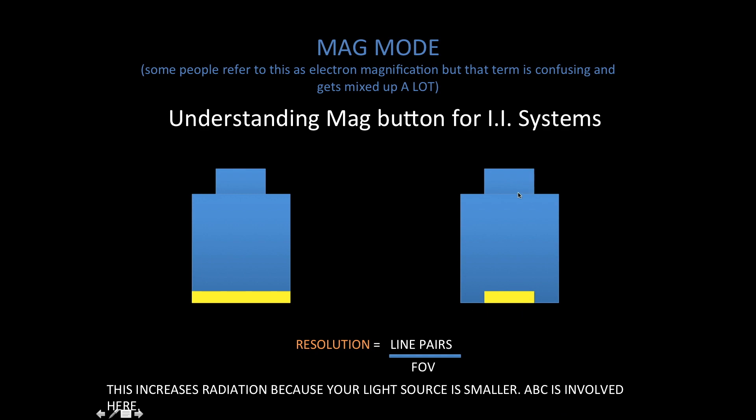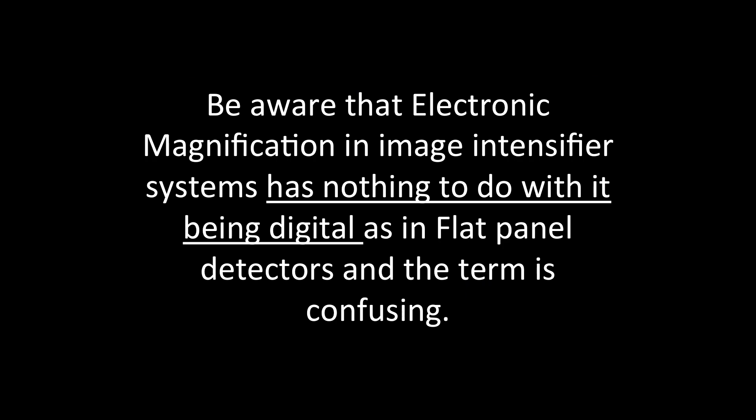You can see that magnification is done by decreasing the size of the input, and therefore you won't have magnification at the anode. The overall effect is increasing resolution and increasing the size of what you're visualizing. Again, be aware that electronic magnification in the image intensifier system has nothing to do with it being either digital or being a flat panel detector. A lot of textbooks refer to it this way, so be aware of that difference.